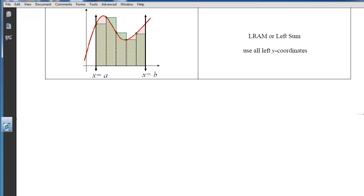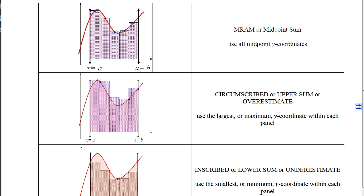Our next choice is LRAM, or the left sum. We choose a sub-interval and take the left x-coordinate, plug it in, and that output forms the height of the rectangle. The area of this rectangle approximates the true area between the curve and the x-axis. The third type is MRAM, or midpoint sum — in every panel we choose the middle x-coordinate, and that generates the y-value that becomes the rectangle's height.